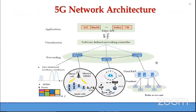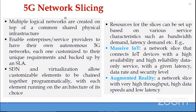This is the 5G network architecture, covering key enabling technologies. An important concept is 5G network slicing: multiple logical networks are created on top of a common shared physical infrastructure. This enables enterprises to have their own autonomous 5G networks, each customized to their unique requirements and backed by service level agreements. Software defined networking and virtualization allow customizable elements to be chained together, each running on the architecture of its choice.